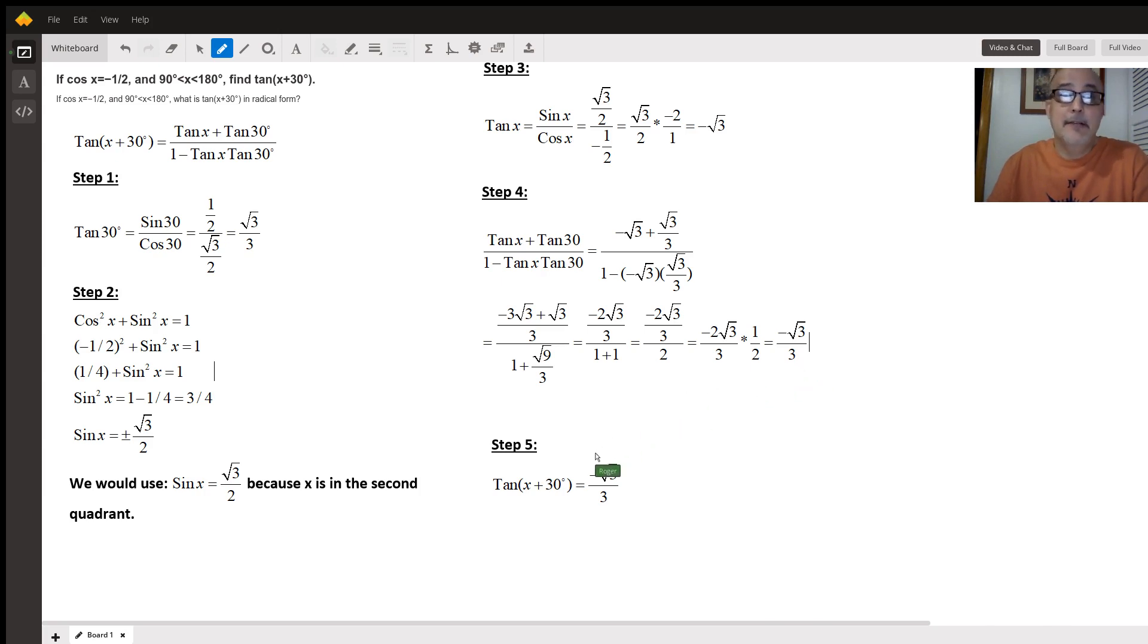Now that's my final answer: the tangent of x plus 30 degrees equals negative square root of three over three. So that answers the question of how to find the tangent of x plus 30 degrees.